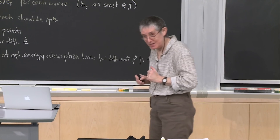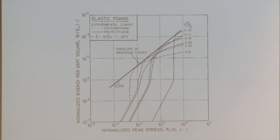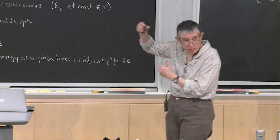Here's another example with curves for two different foams — a polyurethane and a polyethylene, both elastomers, shown as dashed and solid lines. For the polyurethane: density 0.01, density 0.05. For polyethylene: density 0.06. You can see how the 0.06 and 0.05 lines are pretty close to each other on the diagram. Then 0.1 and 0.12, giving a family of curves for the different densities.